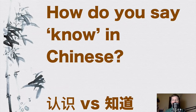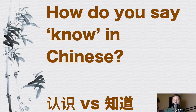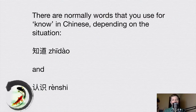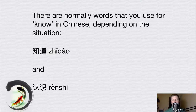Hi everybody, this is Chris from fluentinmandarin.com. Thanks for checking out my video — I'm trying to make Chinese a little bit easier to understand. This time I'm going to be talking about how you say 'know' in Chinese. There are two different words which can be used to translate 'know' in English: 知道 and 认识. The one you use depends on the situation.